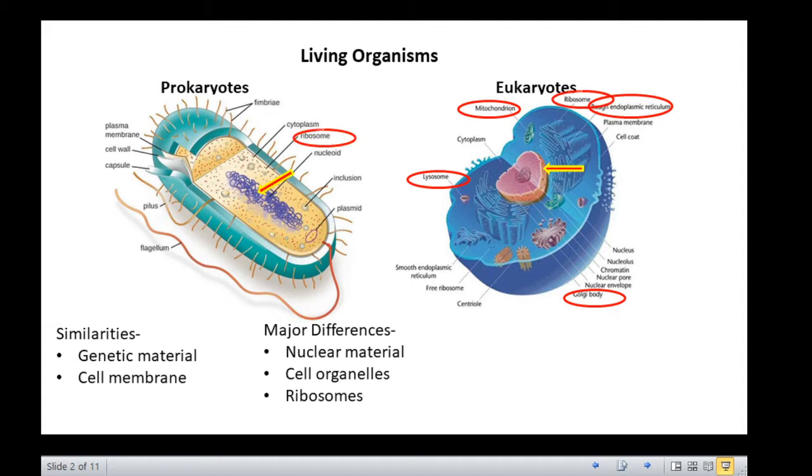Further, the prokaryotes have 70S ribosomes, whereas the eukaryotes have 80S ribosomes. The other differences include size - the prokaryotes are very small, whereas eukaryotic cells are quite large. The prokaryotes are unicellular, while the eukaryotes, generally speaking, are multicellular. Moreover, prokaryotic cells divide by binary fission, whereas eukaryotic cells follow a cell cycle which is strictly regulated.